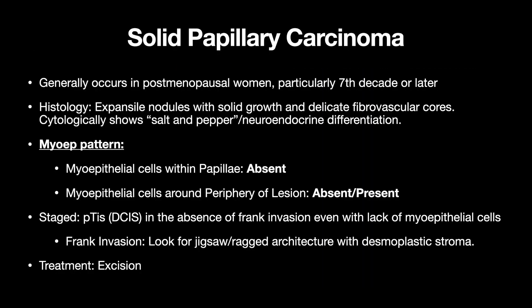Solid papillary carcinoma generally occurs in postmenopausal women, particularly in the 7th decade or later. Histologically, you'll see expansile nodules with solid growth and delicate fibrovascular cores. Cytologically, it can show salt-and-pepper chromatin or neuroendocrine differentiation. Myoepithelial cells within the papillae will be absent, and myoepithelial cells around the periphery of the lesion can be absent or present. It's staged as pTis DCIS in the absence of frank invasion, even with lack of myoepithelial cells around the periphery. Frank invasion is more architecture-based — look for jigsaw/racket architecture with a desmoplastic stroma. Treatment is excision.